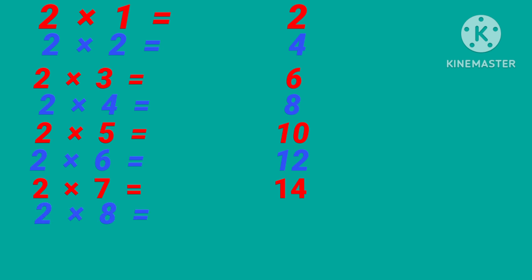2 times 1 is 2, 2 times 2 is 4, 2 times 3 is 6, 2 times 4 is 8, 2 times 5 is 10, 2 times 6 is 12, 2 times 7 is 14, 2 times 8 is 16, 2 times 9 is 18, 2 times 10 is 20.